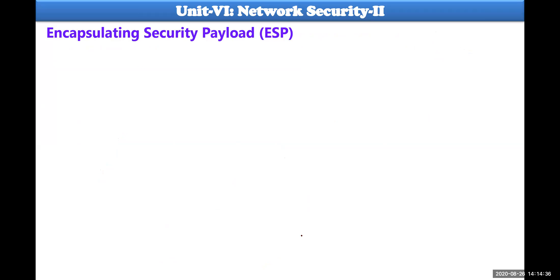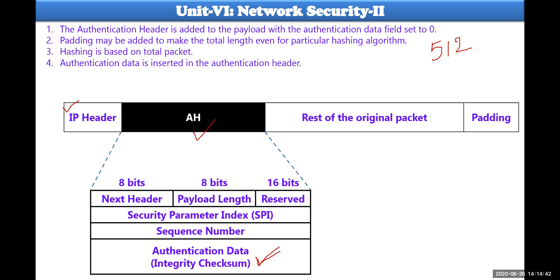The second thing is ESP - Encapsulating Security Payload. The fields we discussed such as next header, security parameter index, sequence number, and authentication data are common for both AH and ESP. But ESP can be added as both a header and a trailer. AH is an entire segment added in one place, whereas ESP gets added in two places: one at the header place and the second one at the trailer place. In between these two we have the actual payload data.